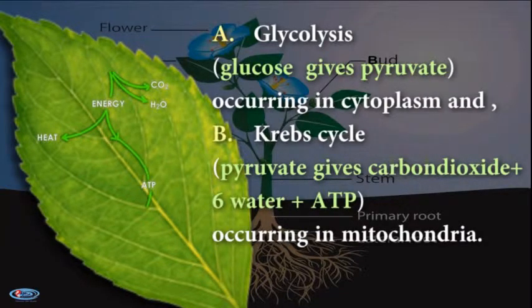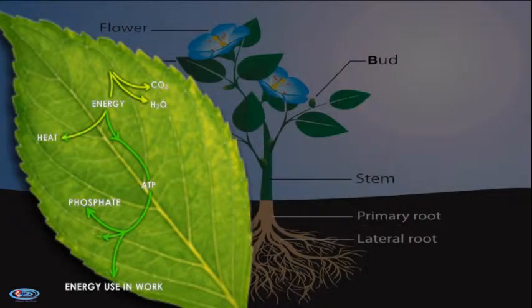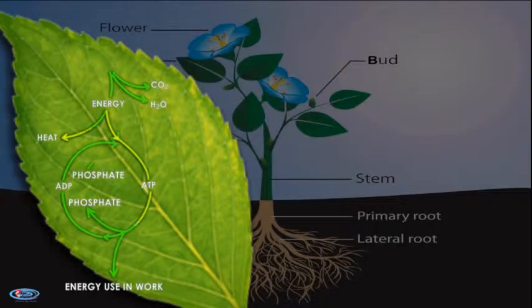Two, each breakdown step is due to a particular enzyme. Three, the energy liberated in the breakdown of the glucose molecule is not all in the form of heat, but a large part of it is converted into chemical energy in the form of ATP.